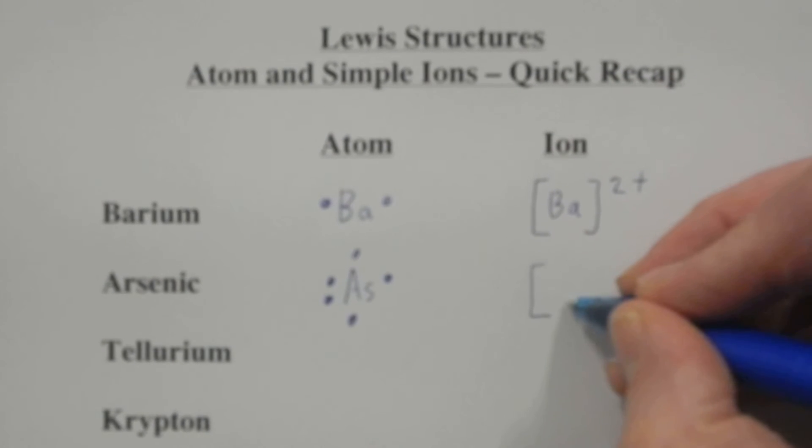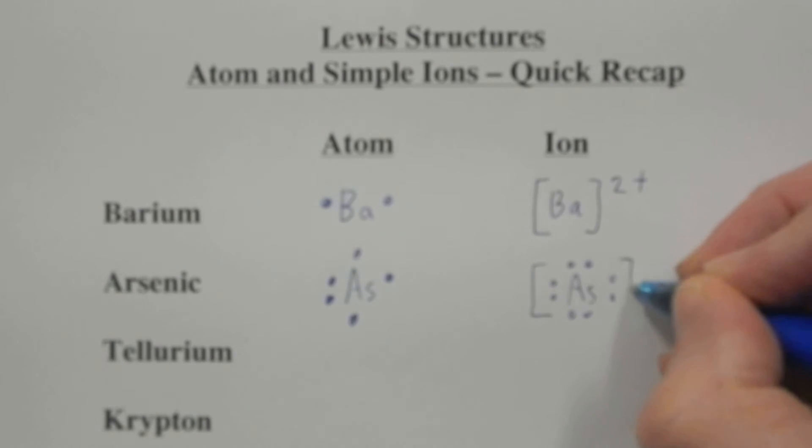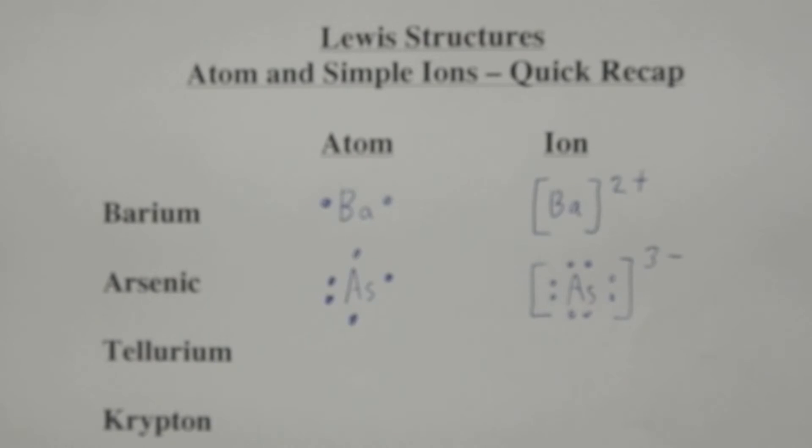It's a non-metal, so it is going to gain three electrons to have its octet. And since it gained three electrons, three negatives, square brackets, three minus charge.